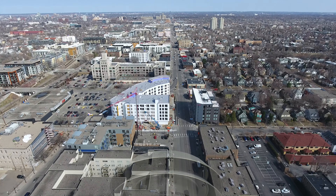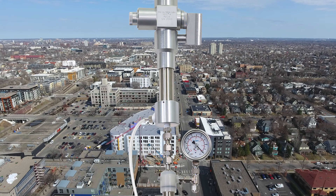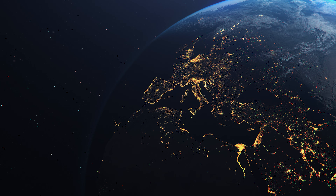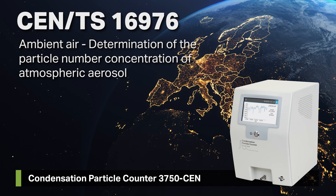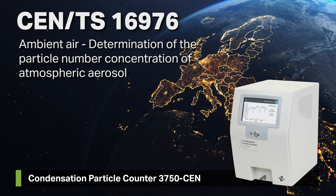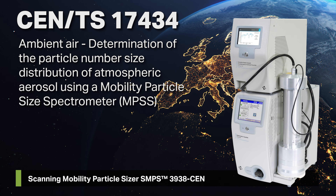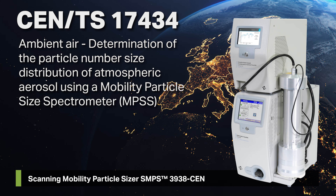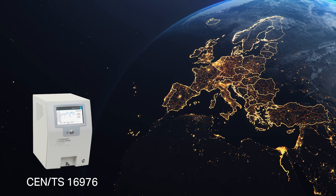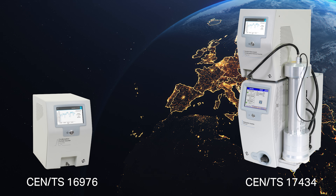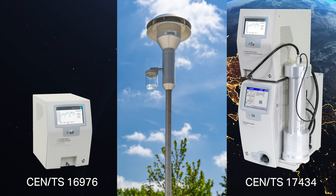The sampling system for atmospheric particles was designed to sample and condition aerosol in compliance with two European SEN standards. The European standard SEN TS 16976 describes the use of condensation particle counters, or CPCs, to determine atmospheric aerosol number concentrations. The European standard SEN TS 17434 describes the use of the scanning mobility particle sizer, or spectrometer, to measure particle size distributions in ambient air. The SEN CPC and SEN SMPS from TSI are both compliant with these standards, and the sampling system can supply aerosol to either instrument or to both simultaneously.